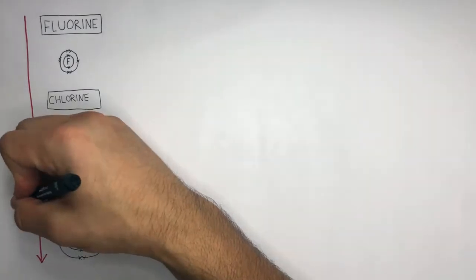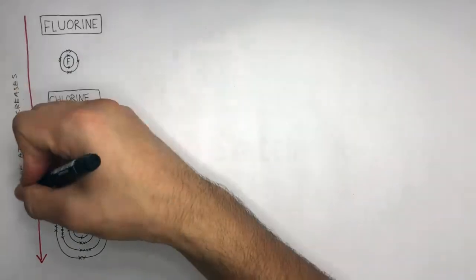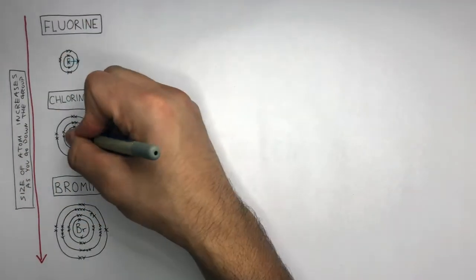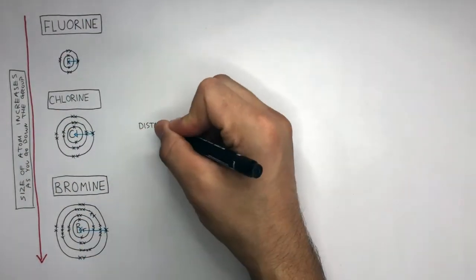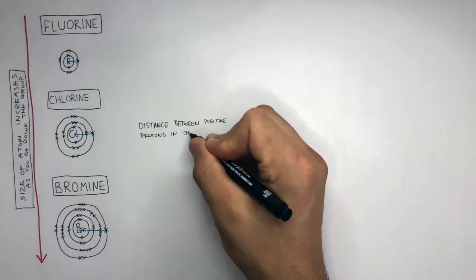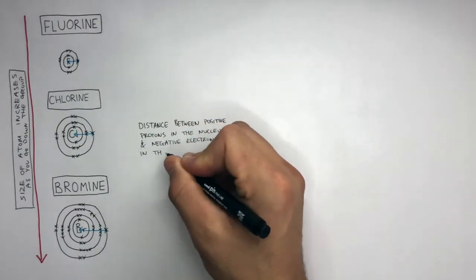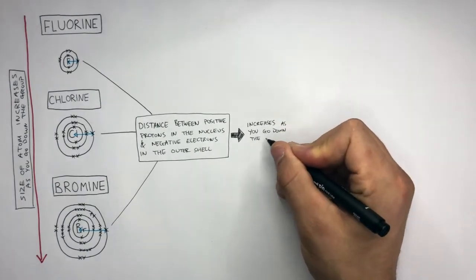You can see from the diagram that the size of the atoms increases as you go down the group. Here I'm drawing blue lines to show how the distance between the positive protons in the nucleus and the negative electrons in the outer shell increase as you go down the group.